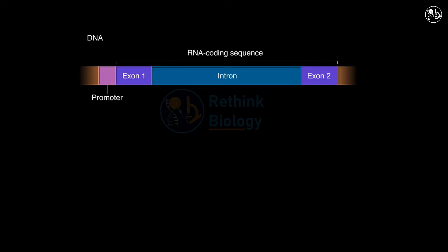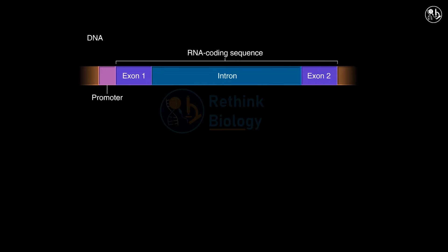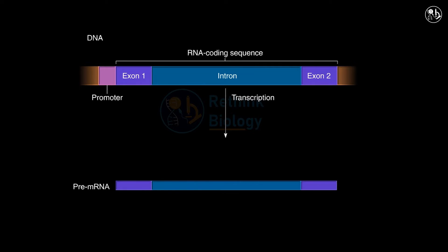Many genes in eukaryotes have sequences that interrupt the coding of amino acids in the protein product. These sequences are introns and they are spliced out of the mRNA. The coding sequences that remain in the mRNA are exons and they specify the amino acids in the protein. The transcription of these genes produces a pre-mRNA molecule, which is an exact copy of the gene with both exons and introns.